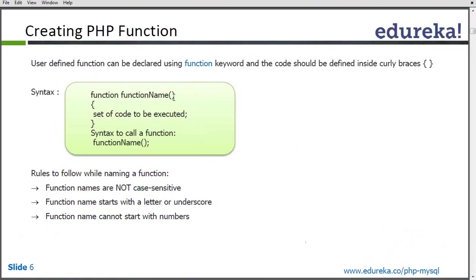After the parentheses, we have curly braces to start, and inside that bracket we write down the code to be executed — the group of statements for a specific purpose. Once the function is declared, we have to call it. We simply write the function name, and in the parentheses, if there are arguments we pass them; otherwise we call the function like this.